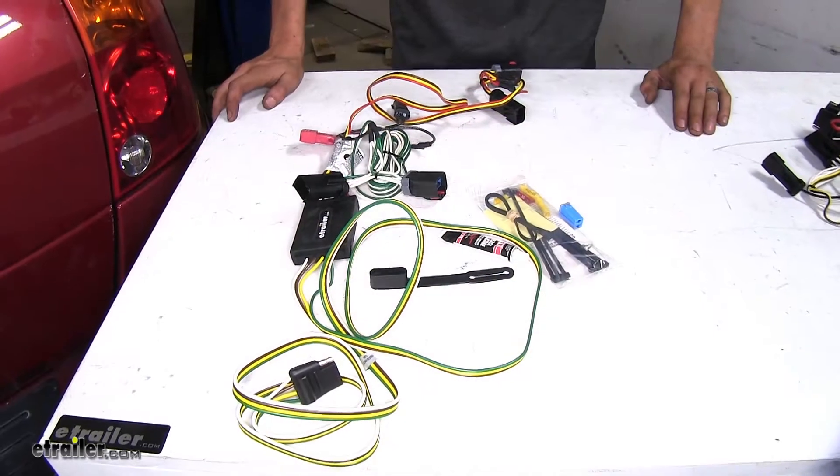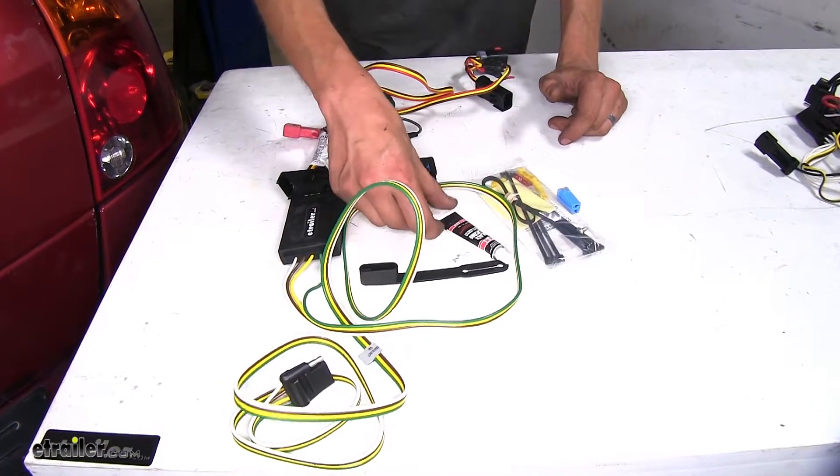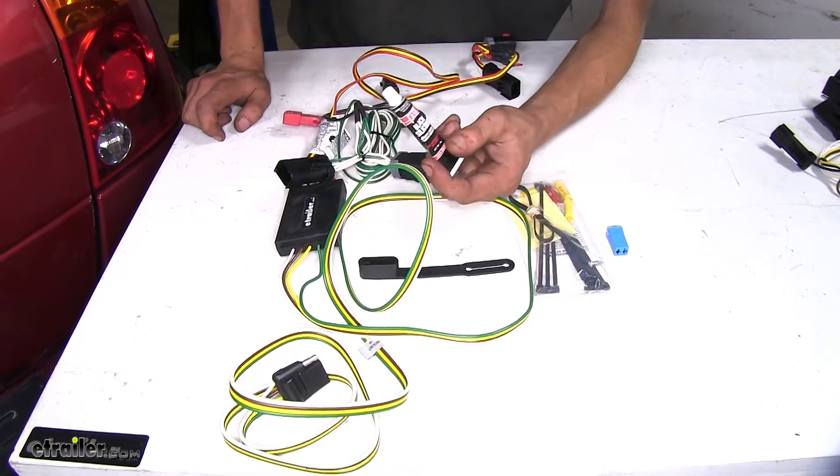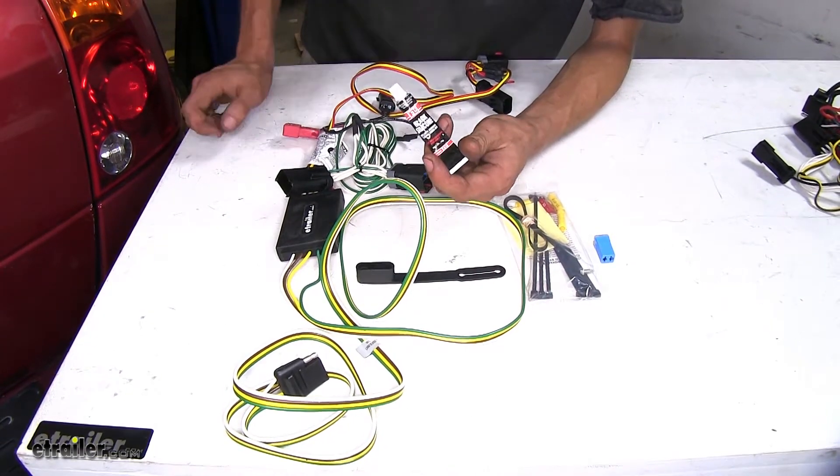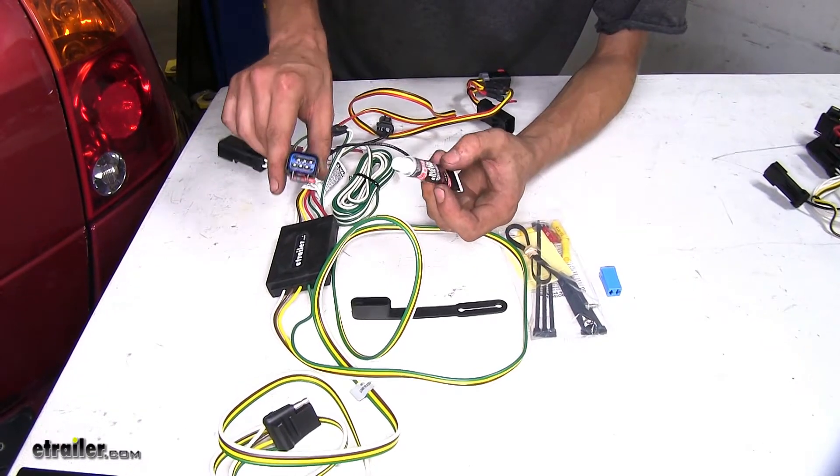Another big difference that we found is in regards to the included accessories. Our Curt wiring harness has everything that you need in order to get it installed. It even comes with a tube of silicone that we can use to seal around the grommets of our taillights after we slice them open to pass our wiring harness through.